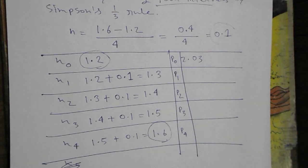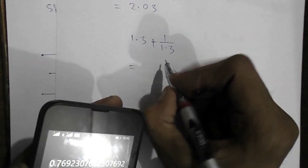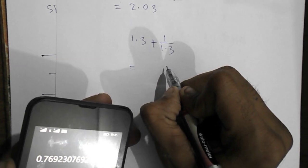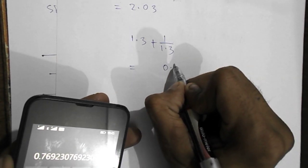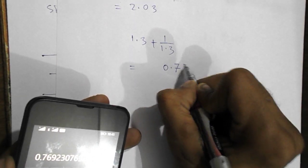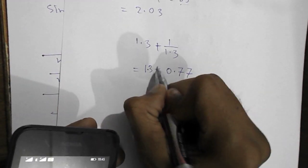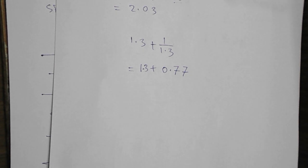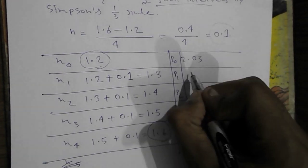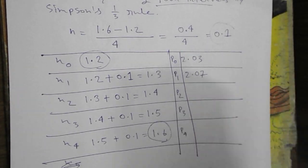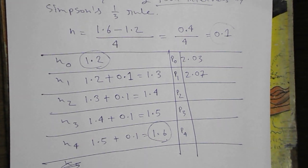So 1 by 1.3 is 0.77 approx. We will add it with 1.3. 1.3 plus 0.77, that is 2.07.